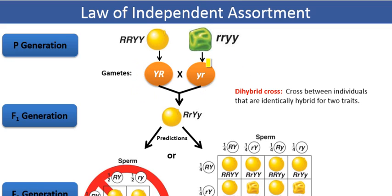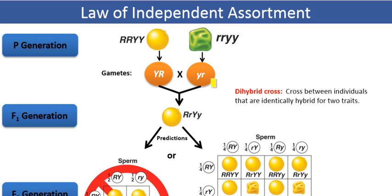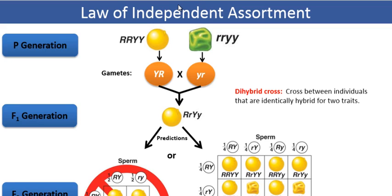The parental line that has green wrinkled seeds will only produce gametes that have the recessive alleles — the small y and small r — representing the recessive traits for color and shape respectively. According to the law of segregation, each allelic pair will segregate into gametes. So one R will go into one gamete and another R into another; similarly, one Y goes into one gamete and another Y into another. The same applies for the recessive variety.